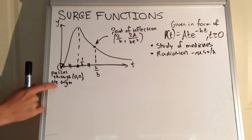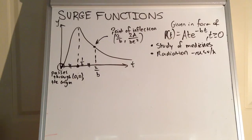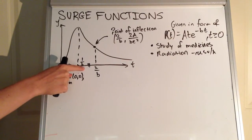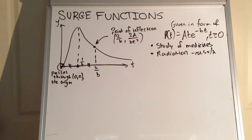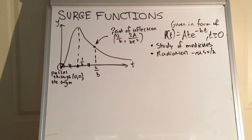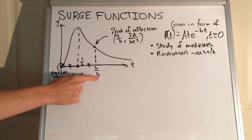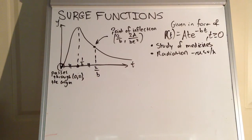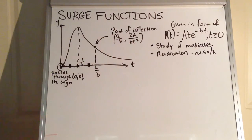It passes through the origin, zero zero. It has a maxima with the time value being 1 over b. The general form for this function is a·t·e to the power of negative b·t. We also have a point of inflection where the time value is 2 over b, and a corresponding y-coordinate for the point of inflection represented by 2a over 2b·e squared.